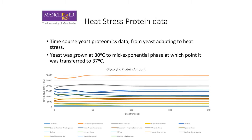The yeast is grown at 30 degrees Celsius up to mid-exponential phase, and then transferred to 37 degrees Celsius. My work is still in progress, so I don't have result graphs yet, but I'm showing the heat stress data from the glycolytic proteins.